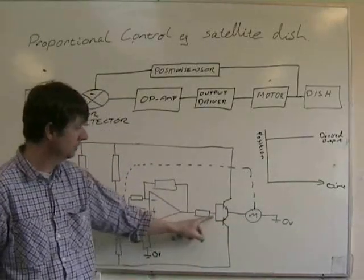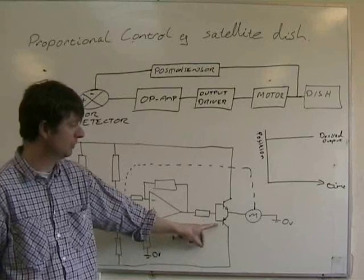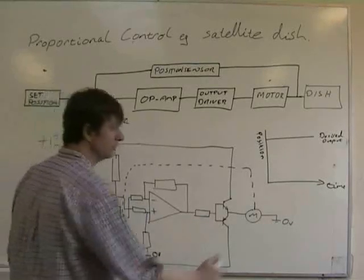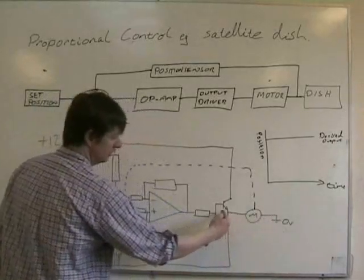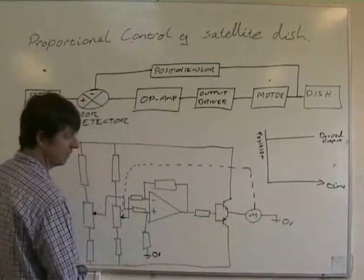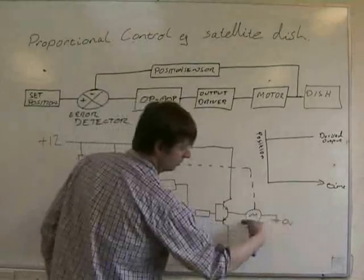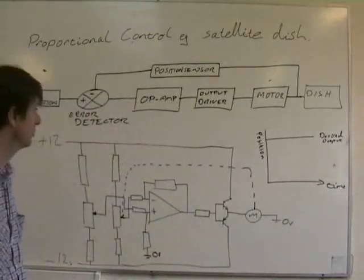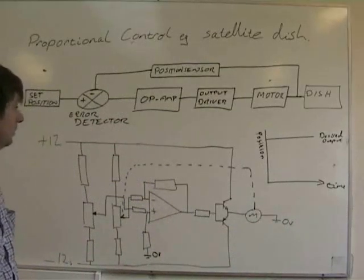When the output here gets to minus 0.7, this transistor will switch on. Current will now flow from zero down to minus 12. So it's going that way through the motor, different direction. The motor will spin in the opposite direction to earlier.